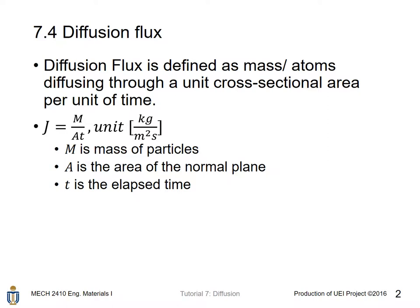Diffusion flux J has a unit of kg per m² times time, equal to mass over area of the normal plane times the elapsed time.